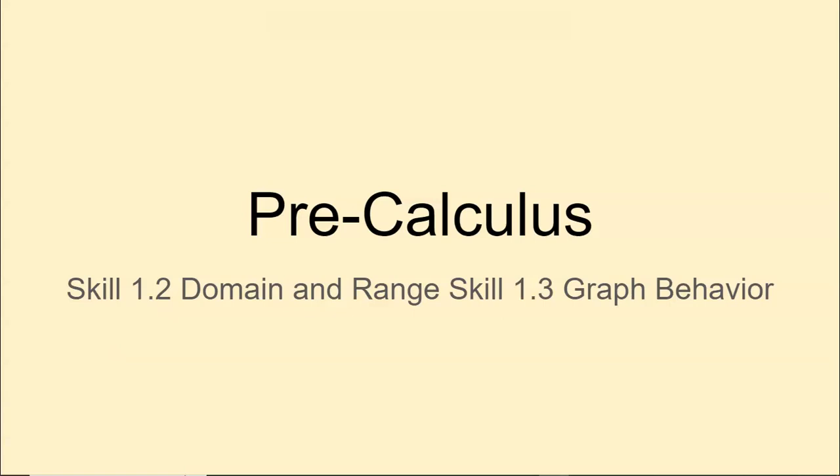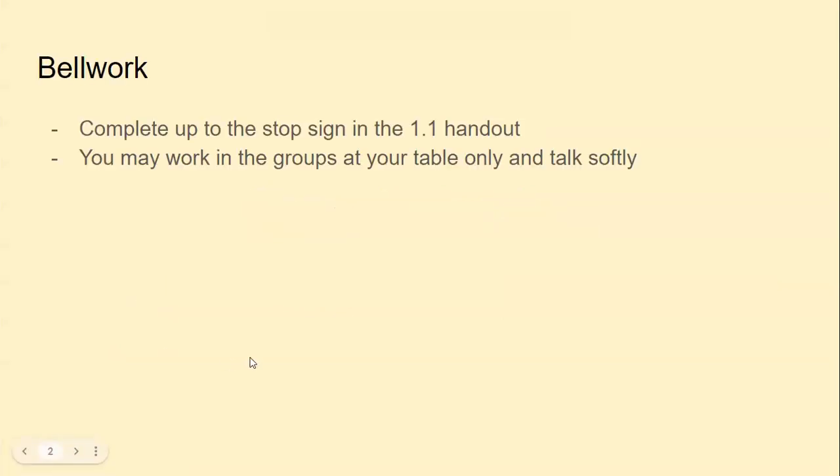So a little more material to get through today. It's going to be similar to what we did last class in terms of the structure. We're going to start with the 1.2 handout, work on the bell work up until the stop sign, and you can work in your groups at your table, and then we will go over it together in the video, and then we'll keep working through 1.2, and then once we finish it, before we get to the IP, we'll go through 1.3 as well.